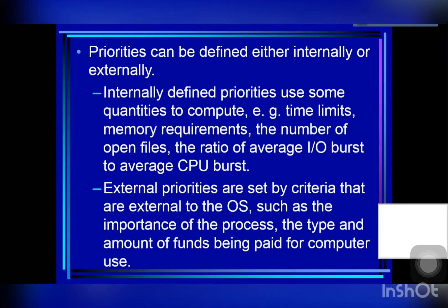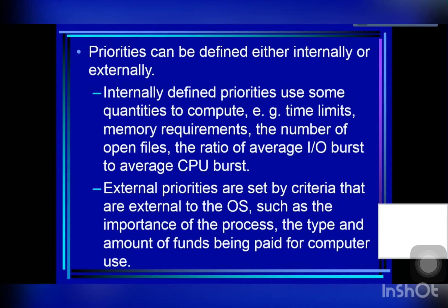For priority scheduling, the most important aspect is the priority assigned to each process. Priority can be defined either internally or externally. Internally defined priorities use measurable quantities such as time limits, memory requirements, the number of open files, and the ratio of average I/O burst to average CPU burst. External priorities are set by criteria outside the operating system, such as the importance of the process, the type and amount of funds being paid for computer use, the department sponsoring the work, and other political factors.